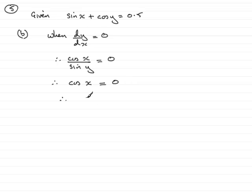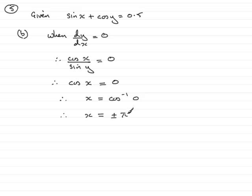To solve for x, x would equal the inverse cos of 0. Now we're told that x has to lie between minus pi and pi. So if I inverse cos 0, I'm going to get two values of x. x can either be plus or minus pi over 2, the equivalent of 90 degrees. This is in radians, so plus or minus pi upon 2 is the same as plus or minus 90 degrees.